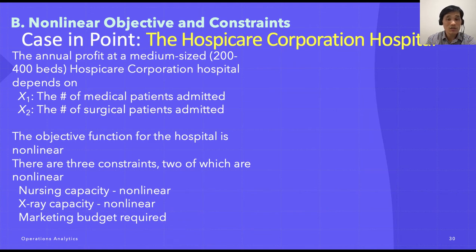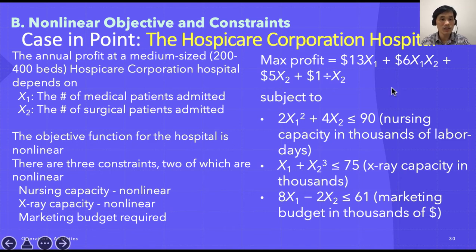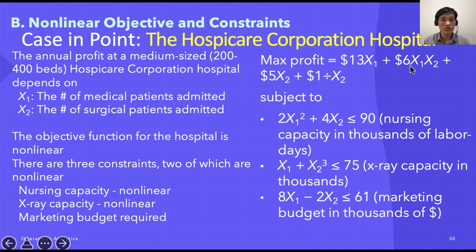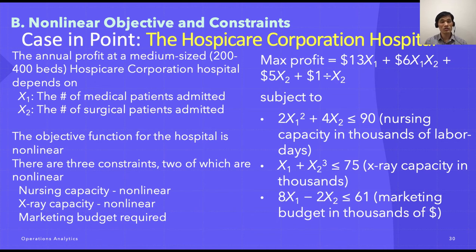According to the hospital's information, the objective is to maximize profit. You make about $13 per medical patient admitted. However, there is an interaction term between medical and surgical patients — that interaction factor is about $6. In other words, many medical patients also end up going through surgical care. You make about $5 per surgical patient admitted, and the term 1/x2 means one dollar divided by the number of surgical patients — so the more patients you have, the less profit from that term. This is a fictitious but plausible case.